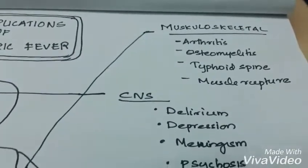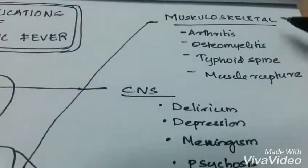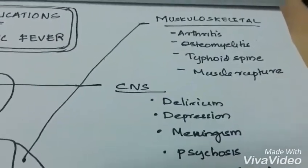Musculoskeletal complications include arthritis, osteomyelitis, typhoid spine, and muscle rupture.